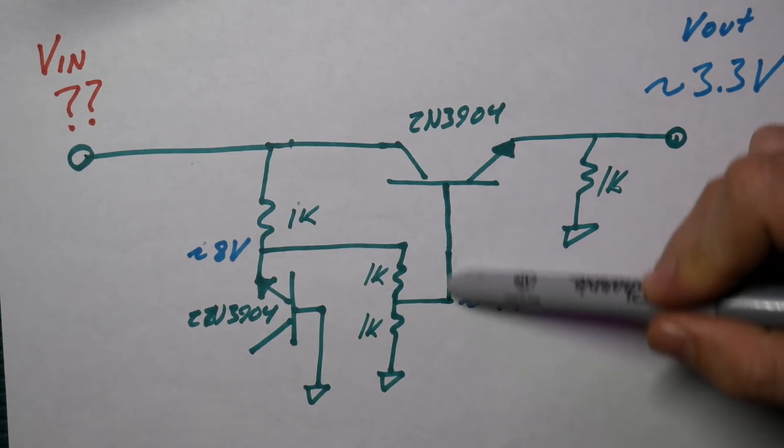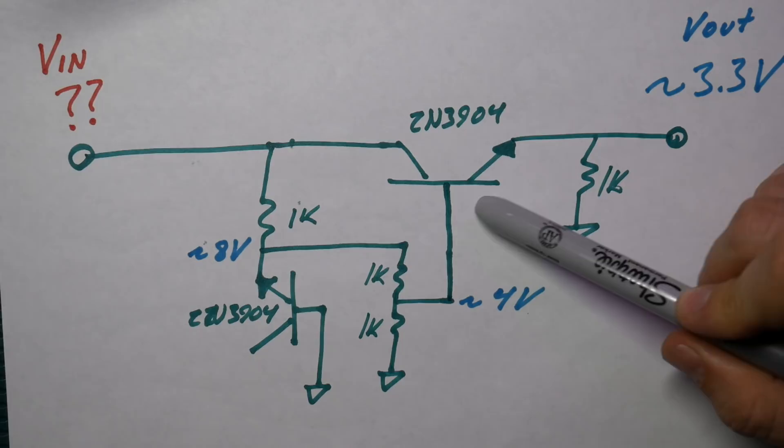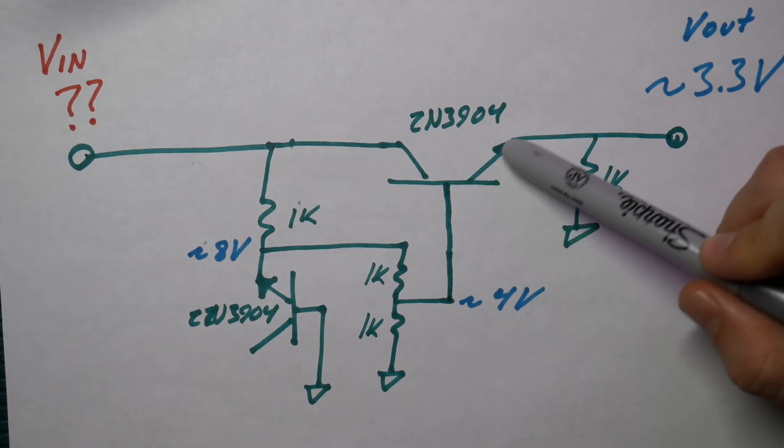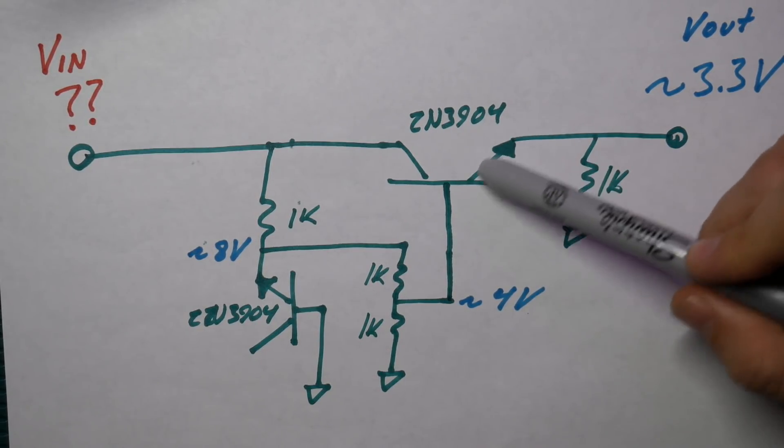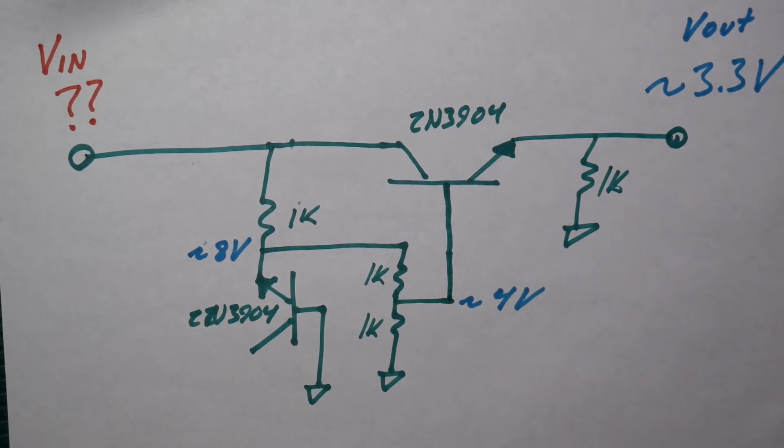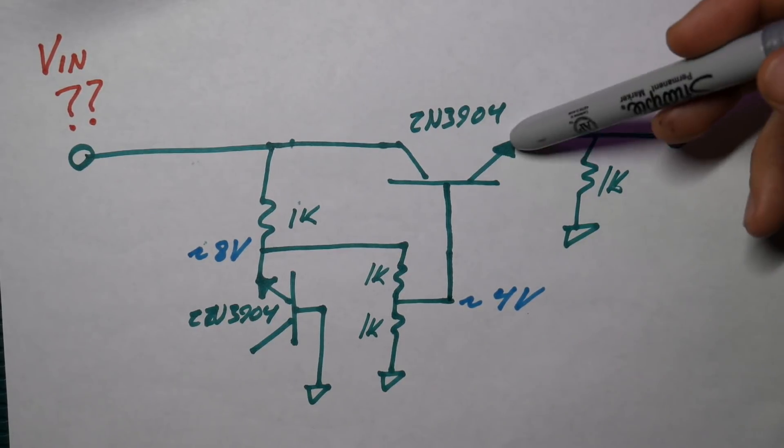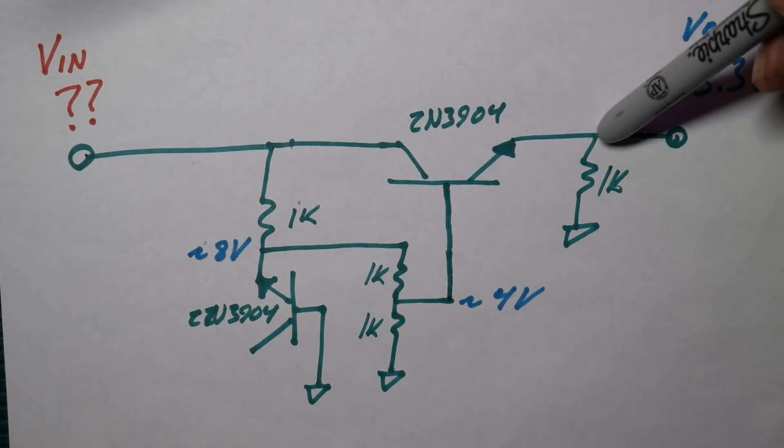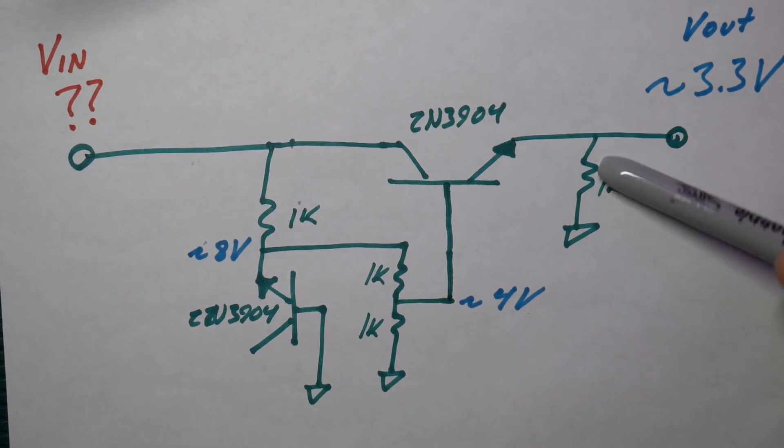Now you have 4 volts at the base. Then you've got the emitter base voltage drop there. That drops another 0.6 or 0.7 volts off of that. Then you end up with a regulated output voltage of about 3.3 volts. And that's all there is to it.